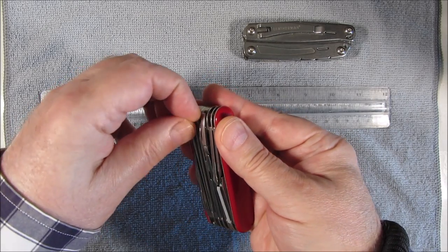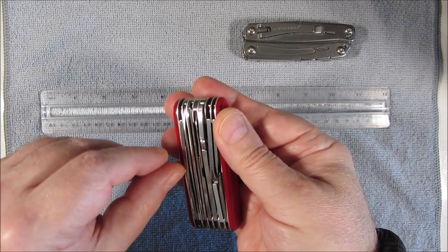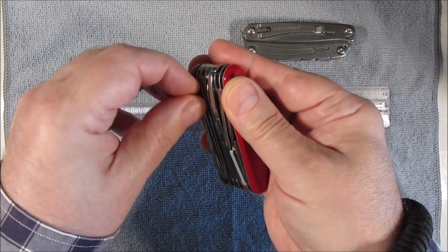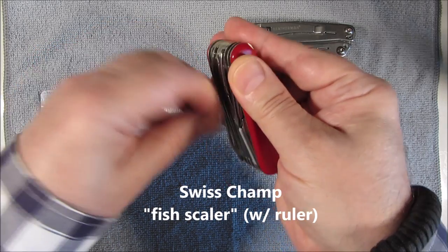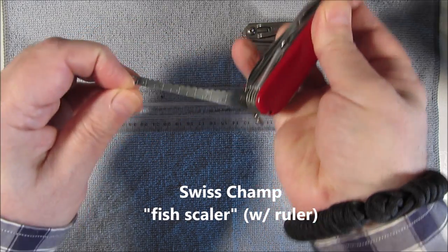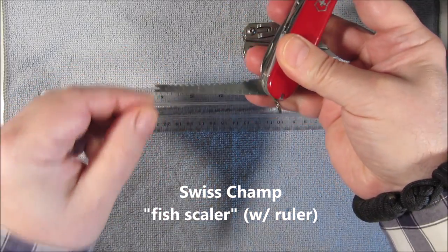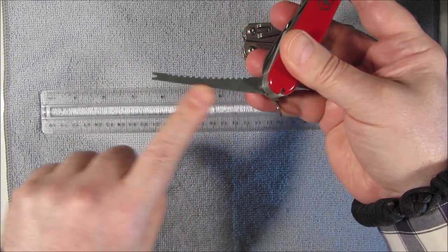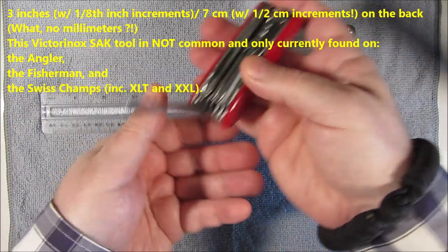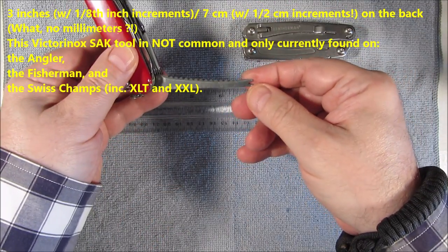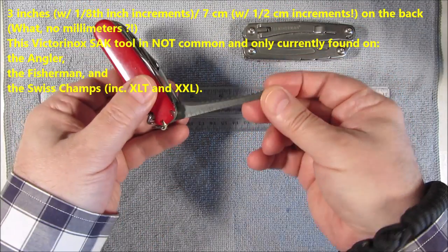Well some, for instance this Leatherman, this Victorinox, if I can find the tool here. It has a very small, hard to read, primitive ruler, but it's only good for three inches, which is not very big.